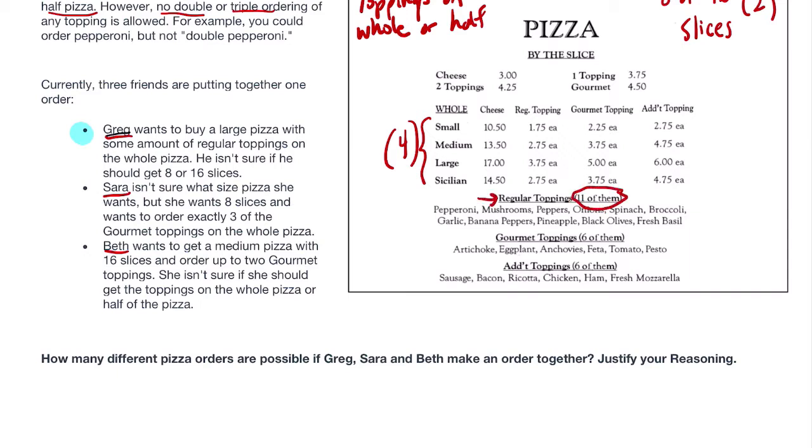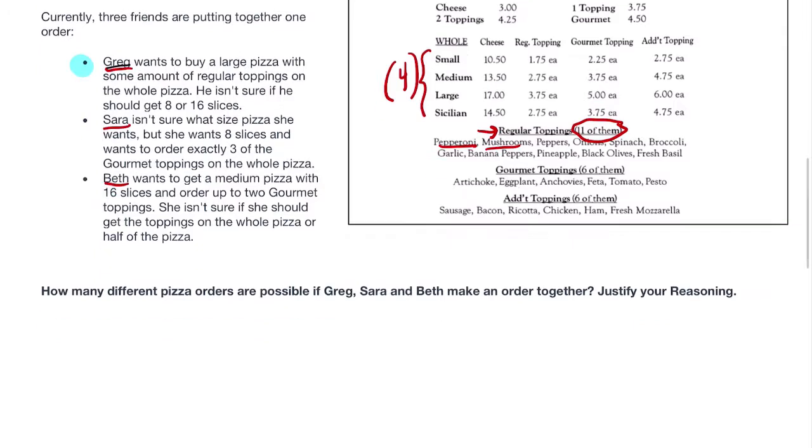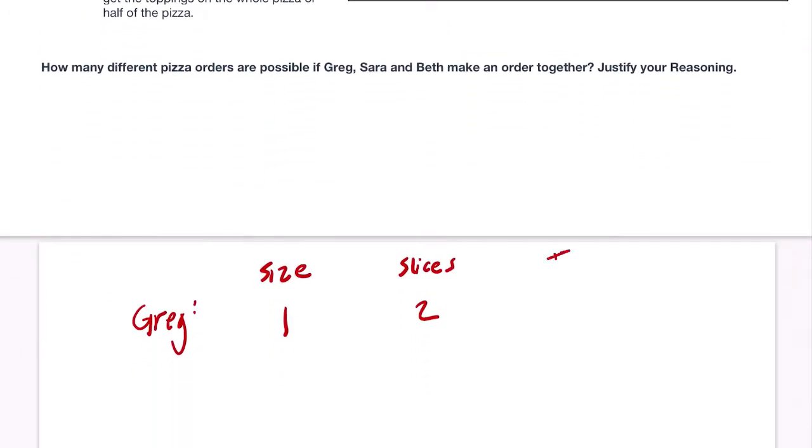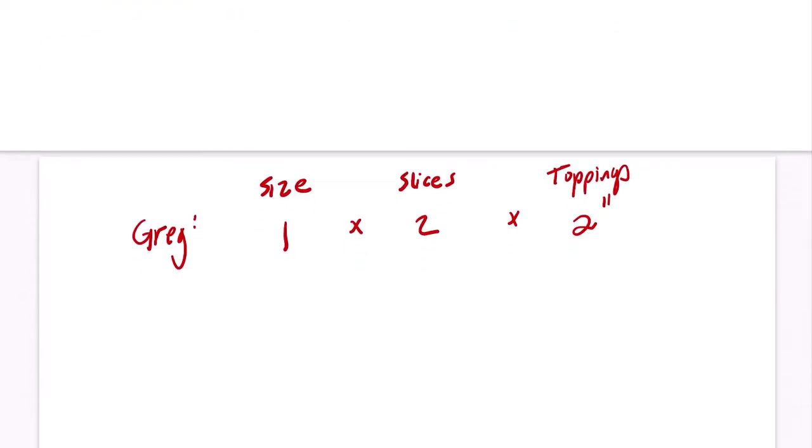And then he knows he wants some amount of regular toppings. It's right here. There's 11 of them. So for every topping, pepperoni, mushrooms, and so on and so forth, he would say yes or no. I do want it or I don't want it. So that's two choices for each topping. So for him, for toppings, he's got two choices 11 times. So that's two to the 11th choices. And that includes no toppings at all because if he says no to every topping, he's not going to get anything on the pizza. And this is tied together by the fundamental counting principle, and that tells us how many total choices Greg faces.